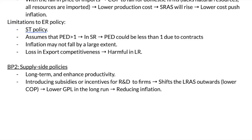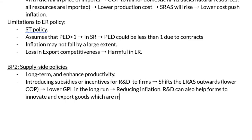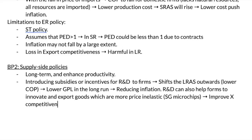R&D can also help firms innovate and export goods which are more price-inelastic. Some examples include Singapore microchips — Singapore is well known for exporting microchips because demand is very price-inelastic in that sector. This will actually help to improve export competitiveness in the long run. You'll notice this tackles the limitation of the exchange rate policy directly — so the supply-side policy kills two birds with one stone, helping to mitigate the issue of falling export competitiveness from the exchange rate policy.